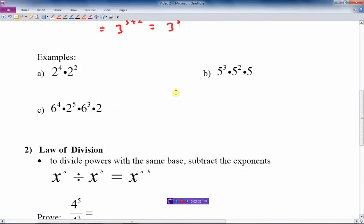Let's do a quick examples here. So if you add that, so this is 2 to the 4 plus 2. Add the exponents, 4 plus 2, and it gives us 2 to the 6.